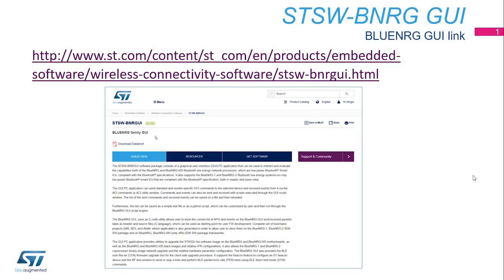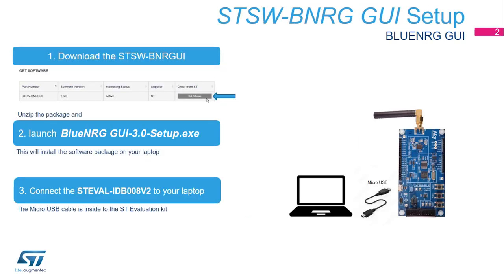For additional information on the BlueNRG GUI, user manual UM2058 is available online. As a prerequisite, the user must download and install the STSW-BNRGUI software. More easily, searching for STSW-BNRGUI in the search engine, you will be redirected to the main page. On the bottom part of the main page, the latest version is available to download. Download the STSW-BNRGUI by clicking the Get Software button.